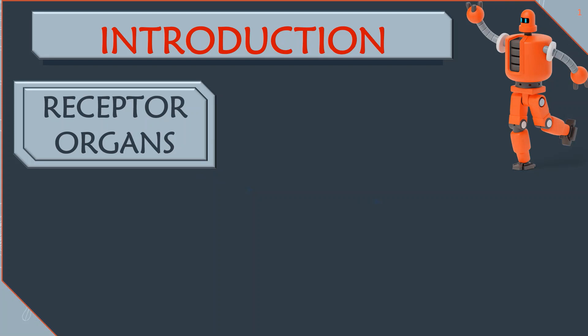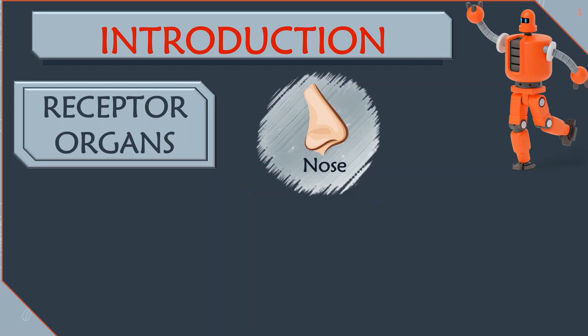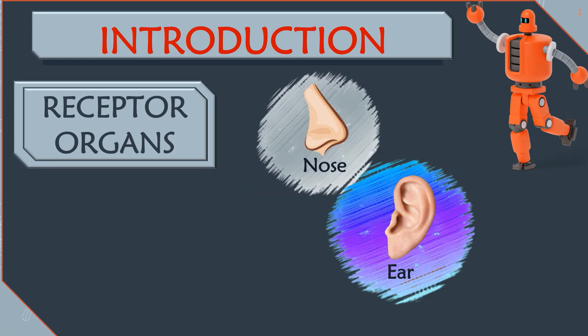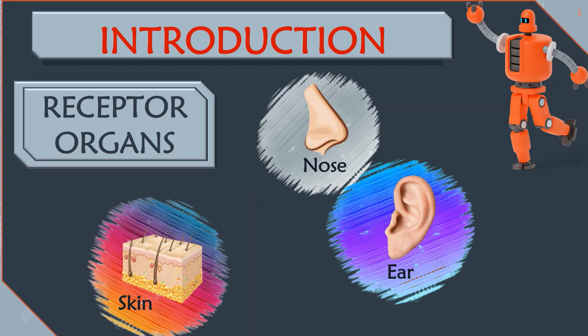There are five receptor organs in humans: nose, ear, skin,